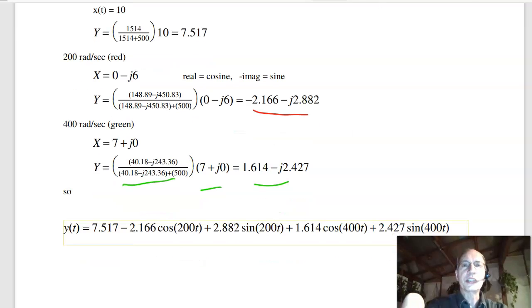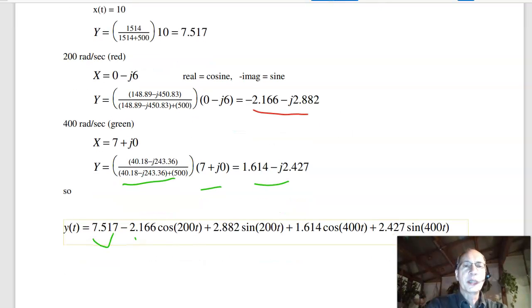The total answer then is your DC plus the first harmonic. Real parts cosine minus j is sine. Plus the second harmonic. Real parts cosine minus j is sine. That's superposition. Once you have superposition and phasors, you really have Fourier transform. So that is quiz number 6 for ECE 320.